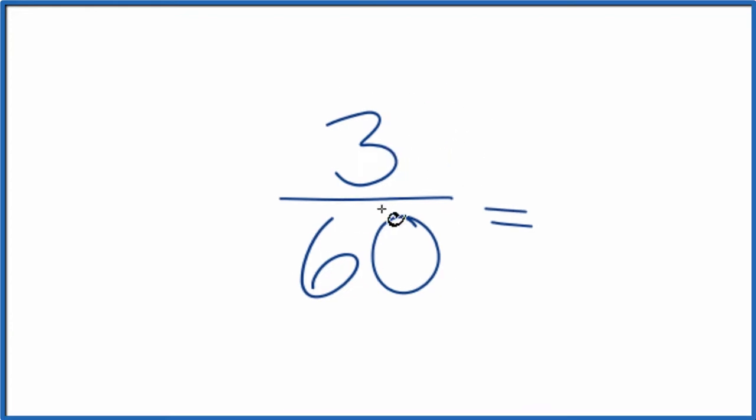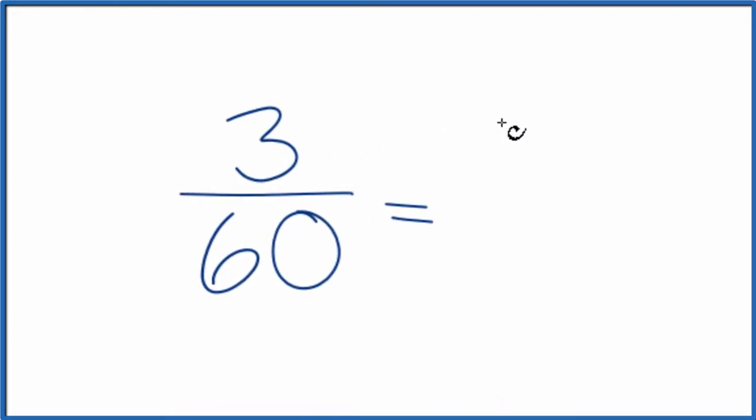So I could just divide the top, 3, by 3. 3 divided by 3 gives me 1. And the denominator here by 3 as well. 60 divided by 3 is 20.